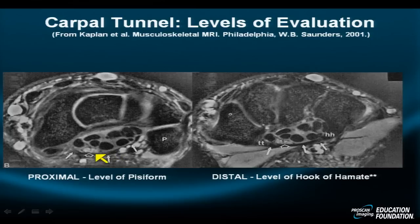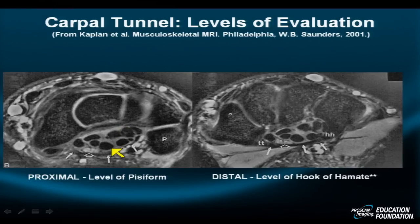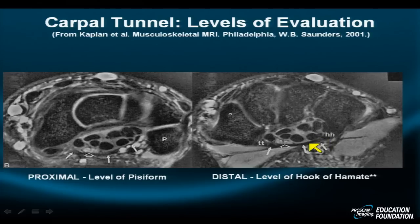Lying over the nerve is a curvilinear, arc-like, dark signal intensity structure — the flexor retinaculum — the superficial boundary of the carpal tunnel space, highlighted with white arrows. Within this space lie the flexor digitorum superficialis, flexor digitorum profundus, and flexor pollicis longus tendons. Outside the tunnel sits the flexor carpi radialis. There is also a deep transverse carpal ligament. At the level of the hamate hook and trapezium, the flexor retinaculum is a little thicker and tighter.